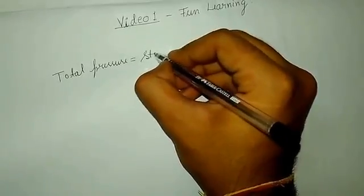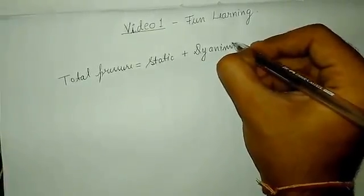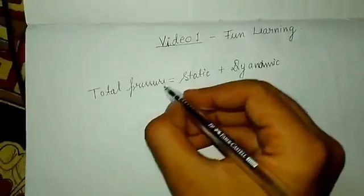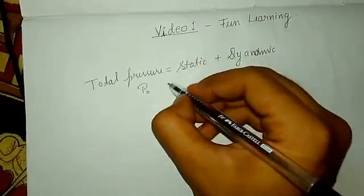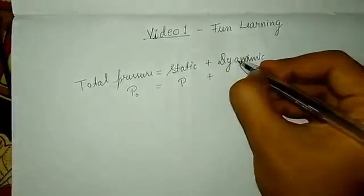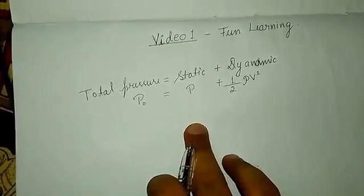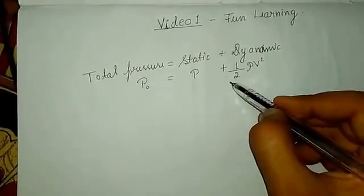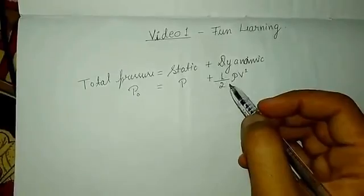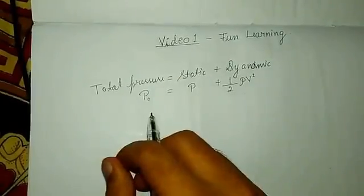Total pressure is equal to static plus dynamic pressure. This quantity is denoted by P naught, static pressure is denoted by P, and dynamic pressure is denoted by half rho V squared. Most of you know that this term represents kinetic energy — it is the mathematical expression for kinetic energy. So P naught equals P plus half rho V squared.